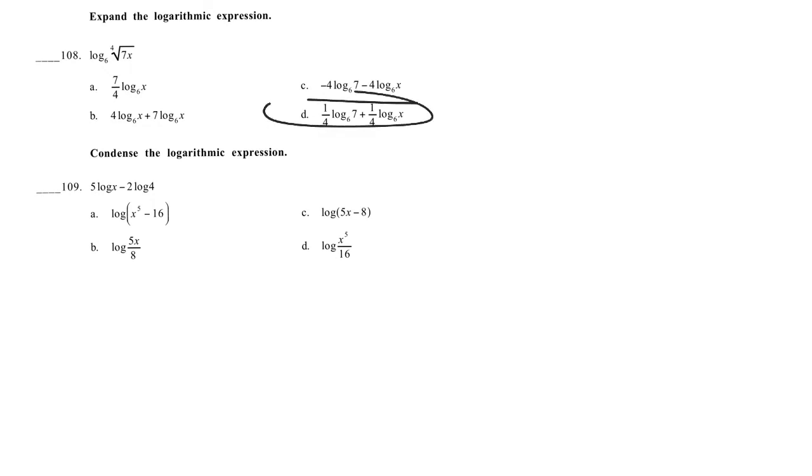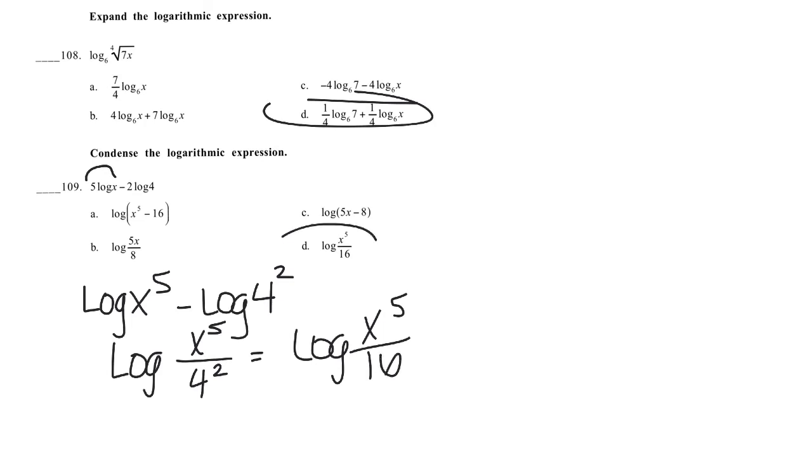This was D. Log 5, a condensed means I'm going to put it together. So my coefficients become exponents, log of x to the fifth minus log of 4 squared. Minus means division, so log of x to the fifth over 4 squared, which is the log of x to the fifth over 16.